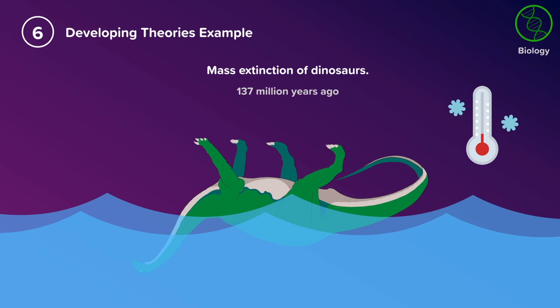So both of these theories show how evidence-based theories can lead to different explanations for the same thing. And as we continue to develop our understanding, it may be that both historical events contributed to the mass extinction of dinosaurs. However, we need even more evidence to be gathered and analyzed to be sure of these claims.